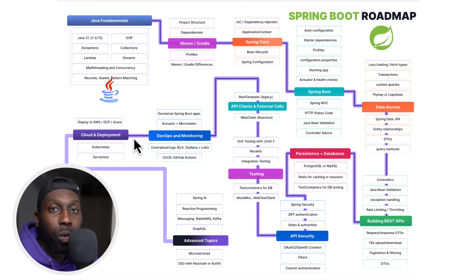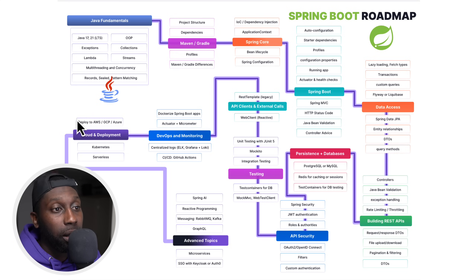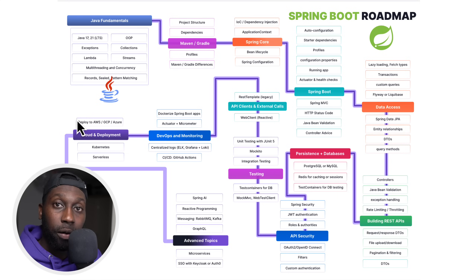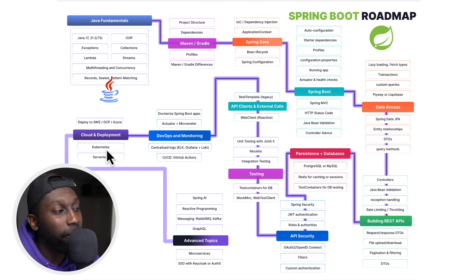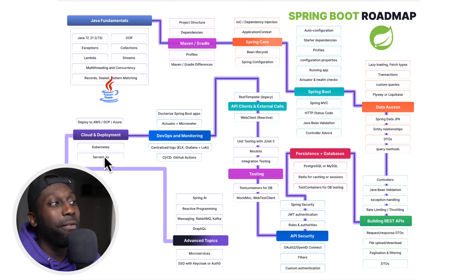Then cloud and deployment: how do you take the Docker image and deploy it to the cloud? Maybe you want to use Elastic Beanstalk where you just provide the Docker image and it creates all the infrastructure for your application, or maybe you want to provision the infrastructure yourself. We also have Kubernetes — very interesting, mainly for large applications. If you're starting a brand new application, don't bother with Kubernetes. You also have serverless options where there are no servers involved.